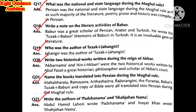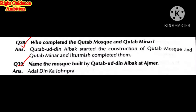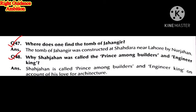Write the authors of Padshahnama and Shah Jahannama — Abdul Hamid Lahori. Who completed the Qutub Mosque and Qutub Minar? Qutbuddin Aibak started them and Iltutmish completed them. Name the mosque built by Qutbuddin Aibak at Ajmer. Where is the tomb of Jahangir? It is in Shahdara, Lahore. Why was Shah Jahan called the prince among builders and engineer king? Because many great structures — like the Red Fort and Taj Mahal — were built in his time, and he had a great love for architecture.